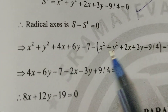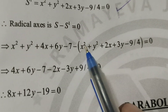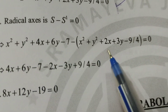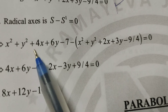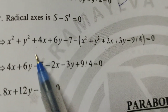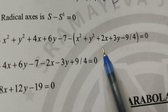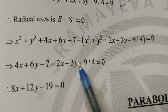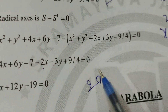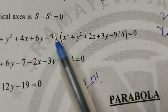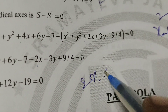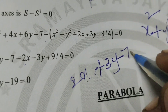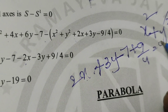Subtracting the two circle equations: x² - x² cancels, y² - y² cancels. Next, 4x - 2x = 2x. Then 6y - 3y = 3y. Next, -7 + 9/4.